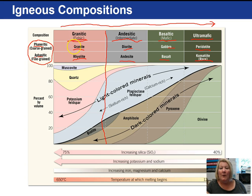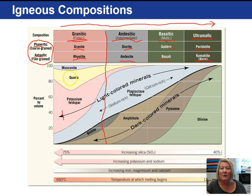Granite and rhyolite contain these minerals: muscovite, quartz, potassium feldspar, plagioclase, biotite, and amphibole — and you can see that it ranges in percentages.